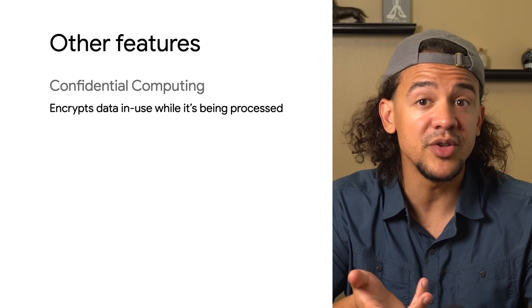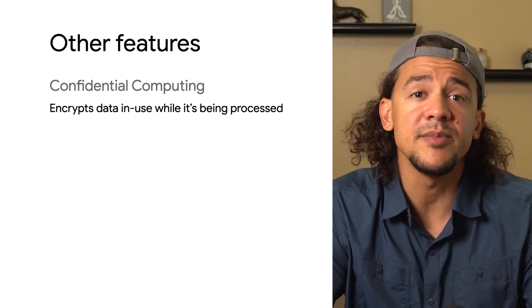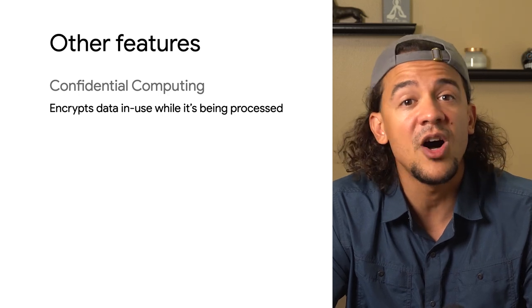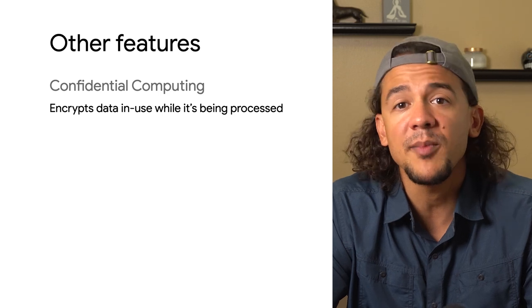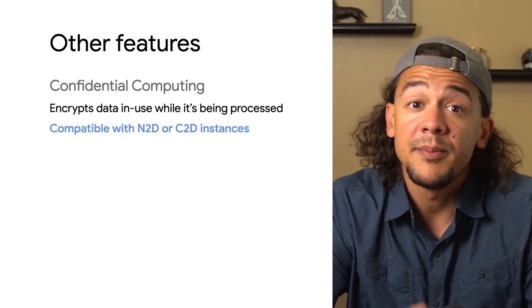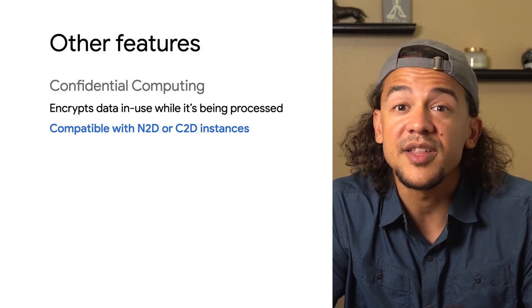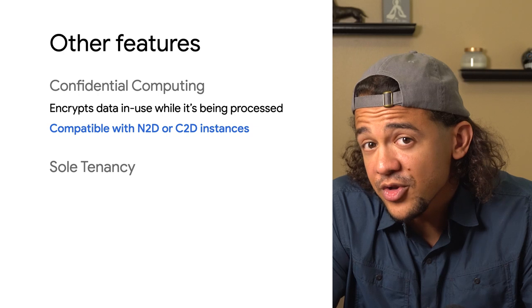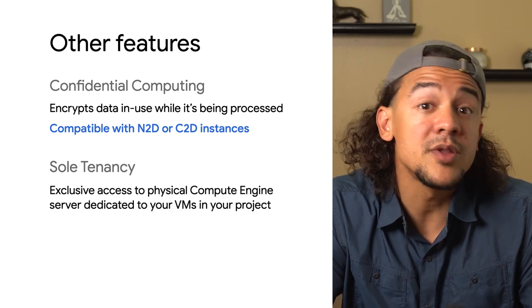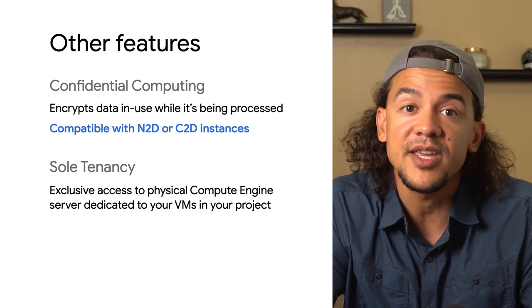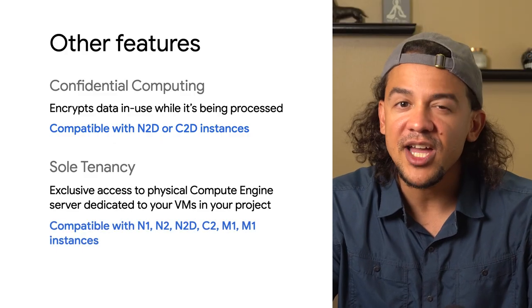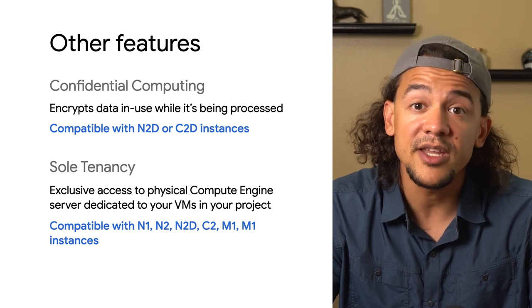Beyond disks, there are other features to check compatibility for when choosing your VM. Confidential computing encrypts data in use while it's being processed — the transition to confidential VMs is seamless, with no extra code changes to applications, just one checkbox to protect against rootkits and bootkits. If you plan on using confidential computing, you'll need to choose an N2D from the general purpose family or a C2D from the compute-optimized family. Another feature is sole tenancy, which gives you exclusive access to a physical Compute Engine server dedicated only to VMs in your project.